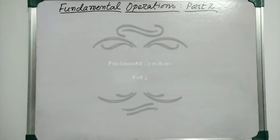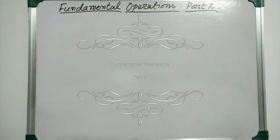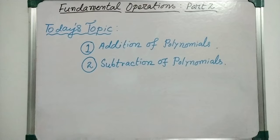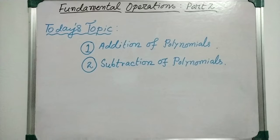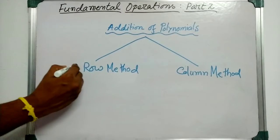Hello students. In the last video we had discussed about addition and subtraction of like terms and unlike terms. Today in this video we will discuss addition of polynomials and subtraction of polynomials, where the polynomials are the algebraic expressions used. So let's go for addition of polynomials. There are two ways to add polynomials: one is the row method and another is the column method.